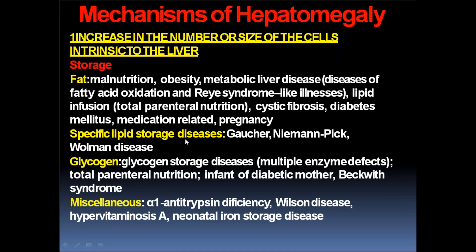Specific lipid storage diseases like Gaucher's disease, Niemann-Pick disease, and Wolman's disease can cause increase in liver size. Glycogen storage diseases, multiple enzyme defects, total parenteral nutrition, infant of diabetic mother, and Beckwith-Wiedemann syndrome can all cause increase in glycogen storage in the liver. Miscellaneous causes like alpha-1 antitrypsin deficiency, Wilson disease, hypervitaminosis A, and neonatal iron storage disease can also cause hepatomegaly.